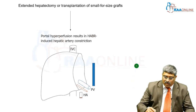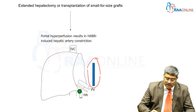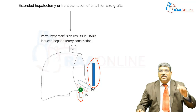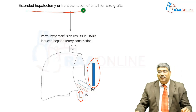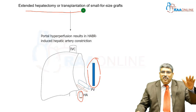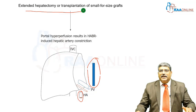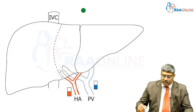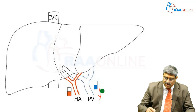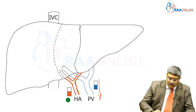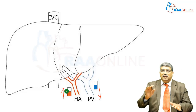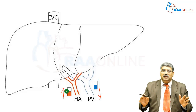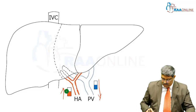In cases where portal vein blood flow increases, the hepatic artery automatically constricts and reduces the blood flow. This happens in the case of extended hepatectomy or transplantation, where portal hyperperfusion will occur and the hepatic artery automatically constricts and reduces flow. In situations where portal vein blood flow comes down, such as portal vein thrombosis, the hepatic artery blood flow increases to maintain a normal blood flow to the liver.